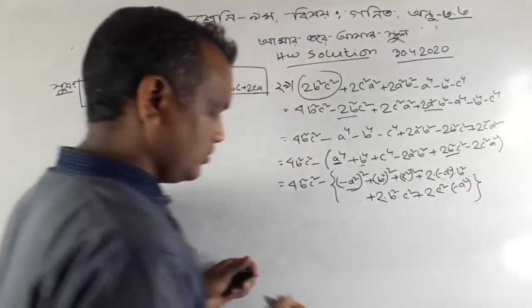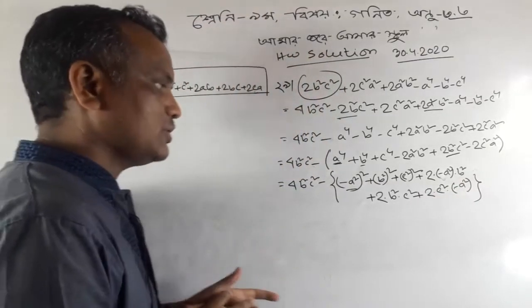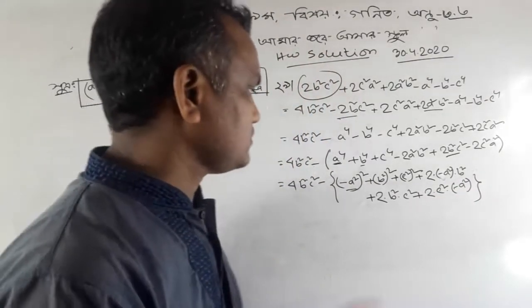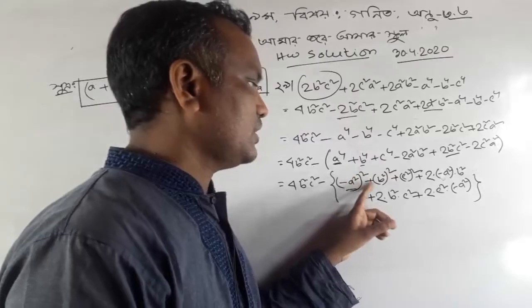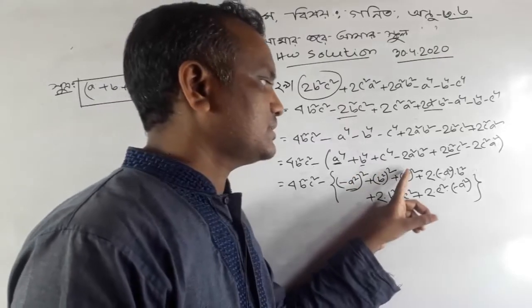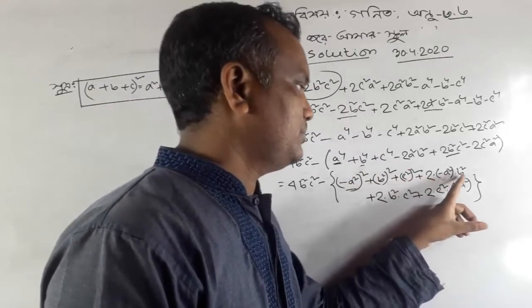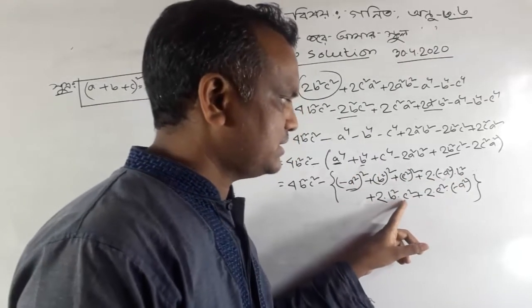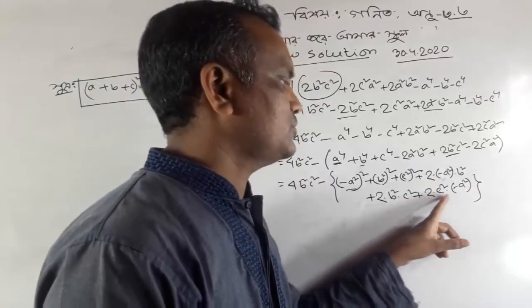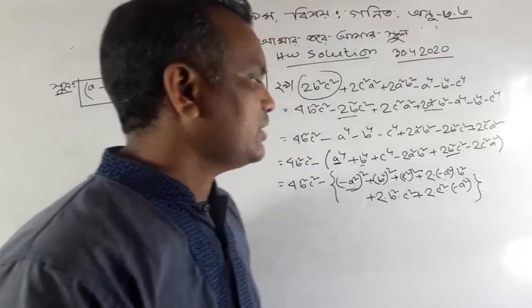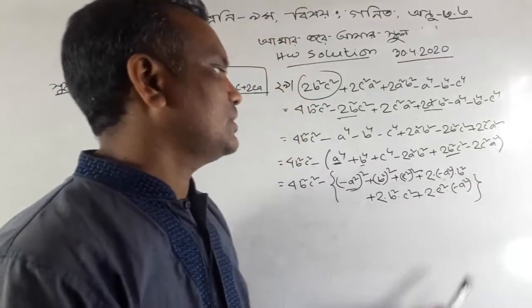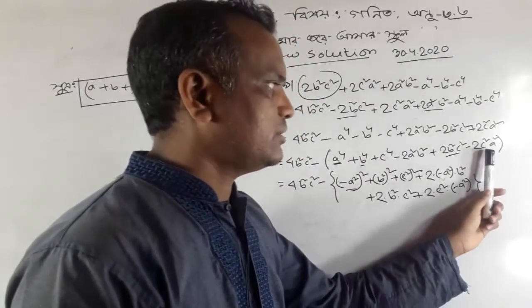Let's see — we have to get out of here. A squared plus b squared plus c squared plus 2ab plus 2bc plus 2ca. Now we have to look at this.